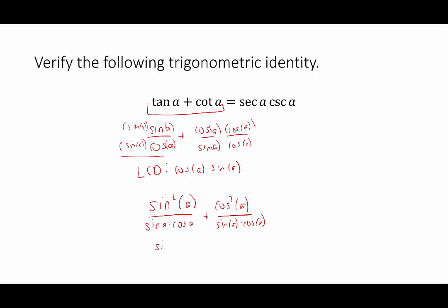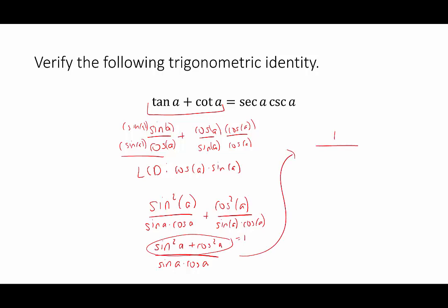Now we can combine the numerators: sine squared a plus cosine squared a over the common denominator sine of a times cosine of a. Sine squared a plus cosine squared a is a Pythagorean identity — that equals 1. So we have 1 over sine of a times cosine of a. Since 1 over sine of a is cosecant of a, and 1 over cosine of a is secant of a, this matches the right-hand side, and we have successfully verified this identity.